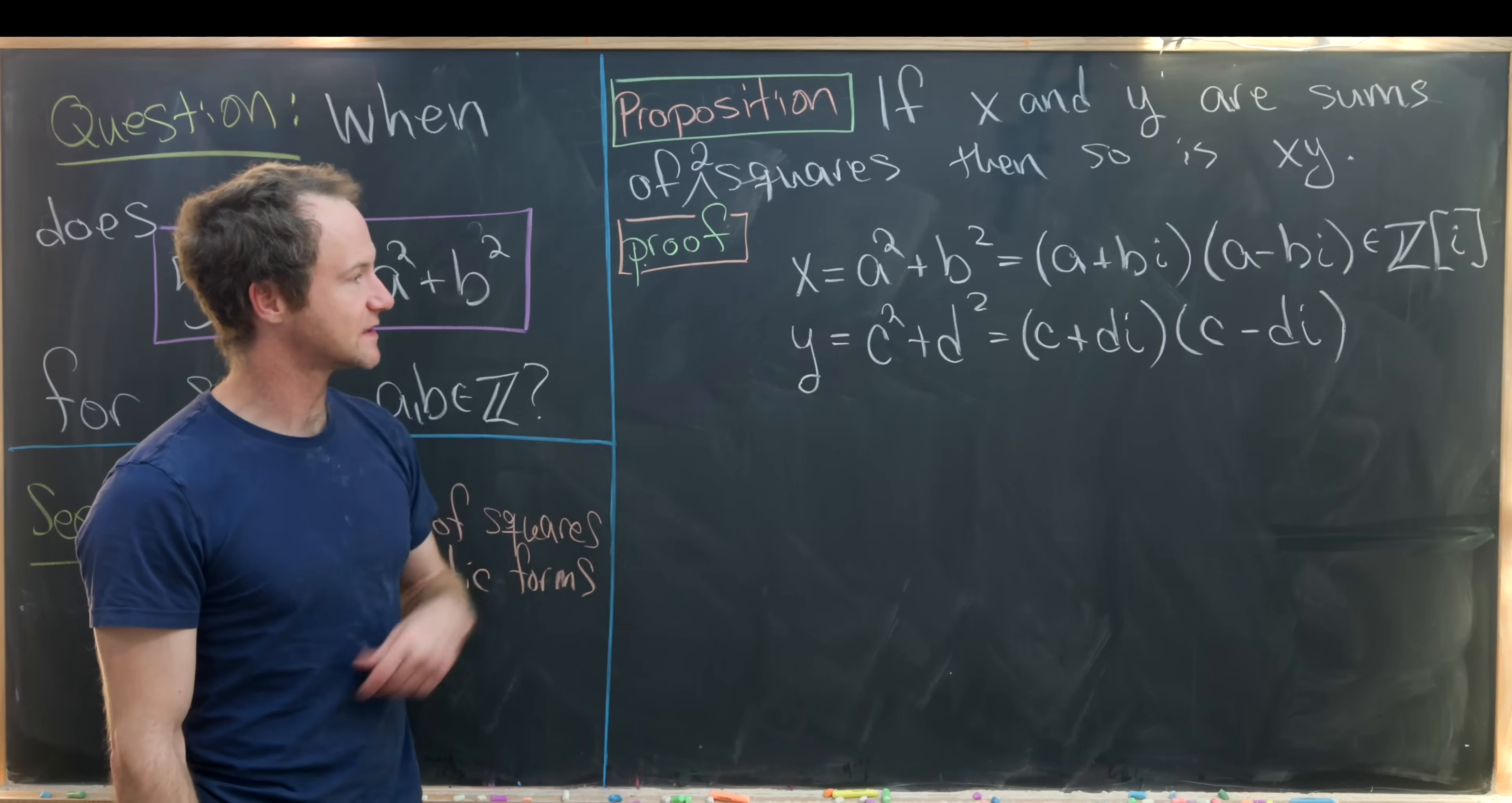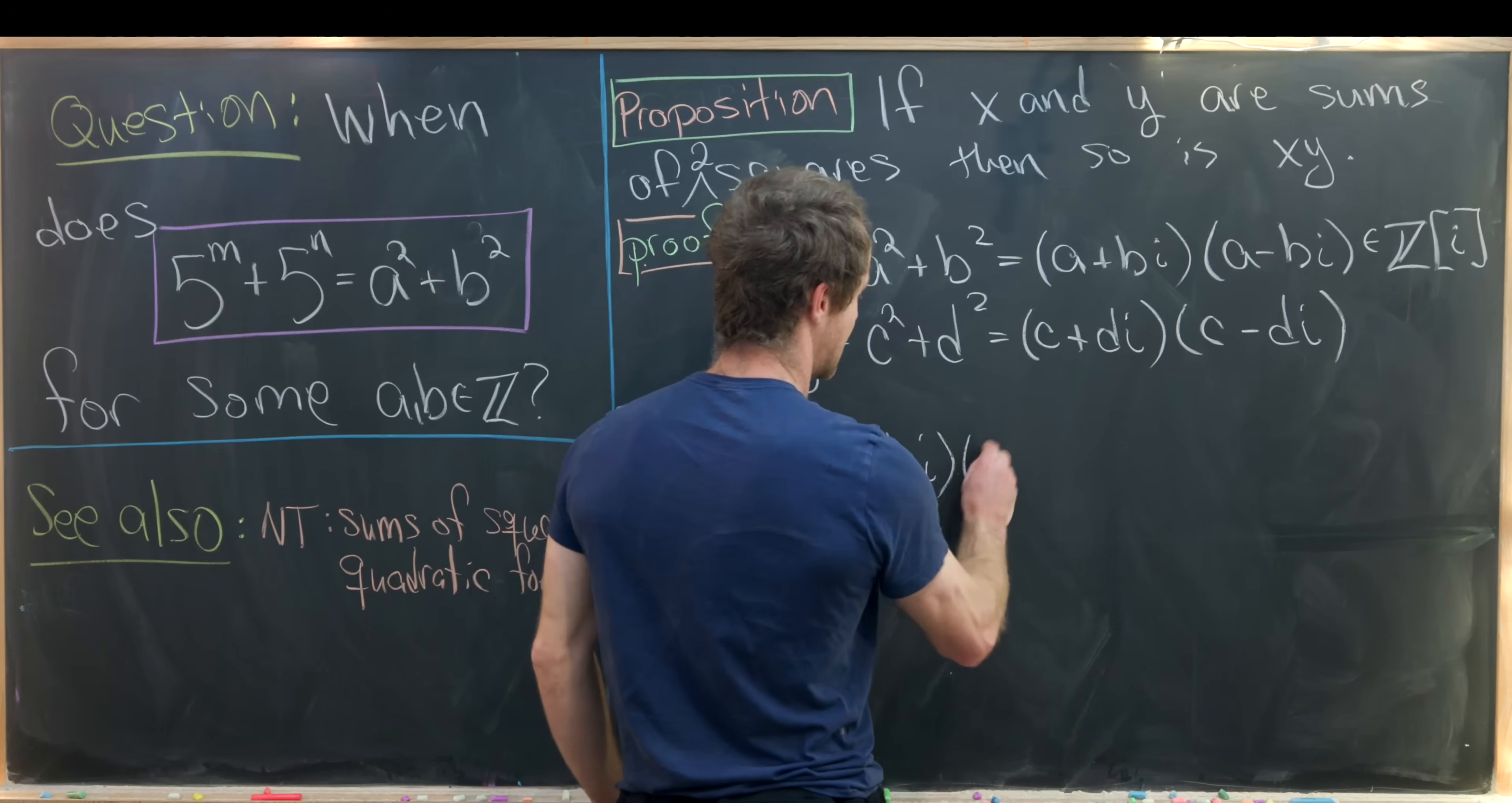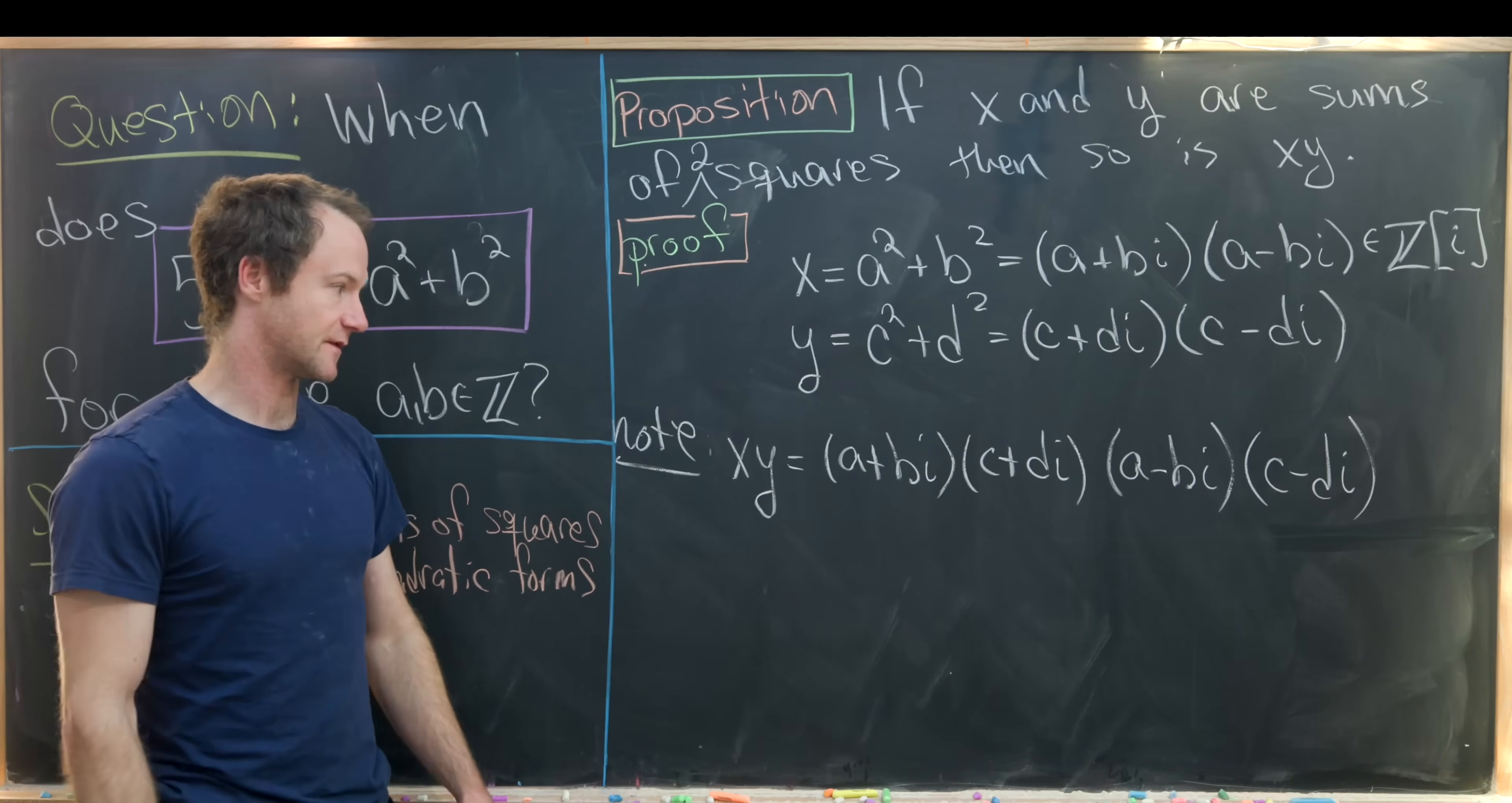And from here we'll multiply x and y and carefully combine these four objects. Let's notice that x times y is in fact equal to a plus bi times c plus di times a minus bi times c minus di. So I've commuted some things around there.